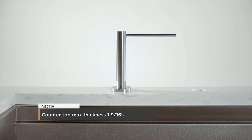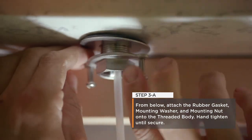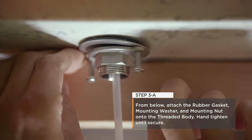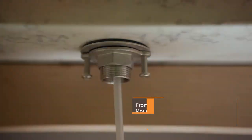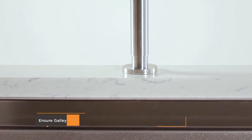The counter should be no thicker than 1 and 9 sixteenth inches. Step 3: From below, attach the rubber gasket, mounting washer, and mounting nut onto the bottom of the threaded body. Ensure that the galley logo on the base ring is facing forward before tightening.